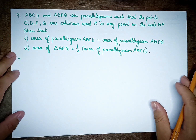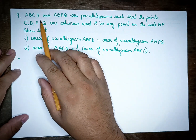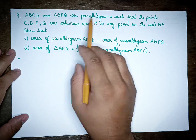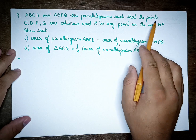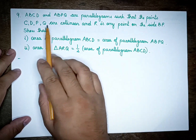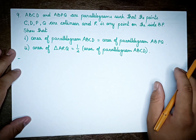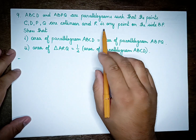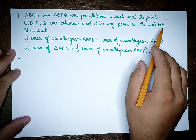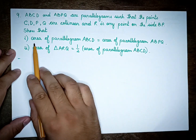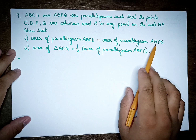Now we have done exercise 9.1, the last question. So we have parallelograms ABCD and ABPQR, such that the points C, D, P, Q are collinear, and R is any point on the side BP.